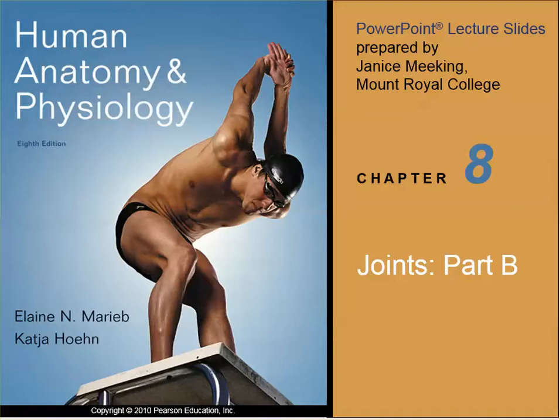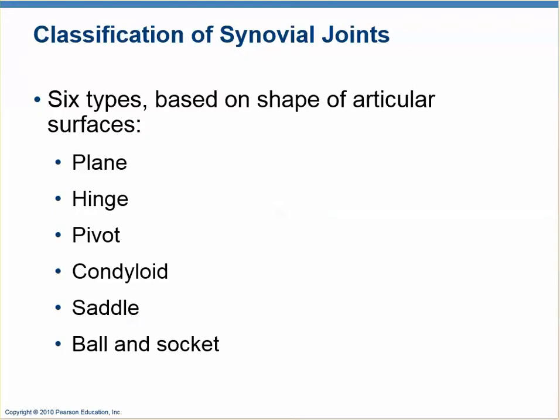We'll continue with our look at synovial joints. We talked about the movements that can happen at synovial joints, and those movements happen because of the shapes of the joints — the structure of the joint. We look at six different types of structures or shapes of the joint surfaces that allow certain motions and disallow others: plane, hinge, pivot, condyloid, saddle, and ball and socket.